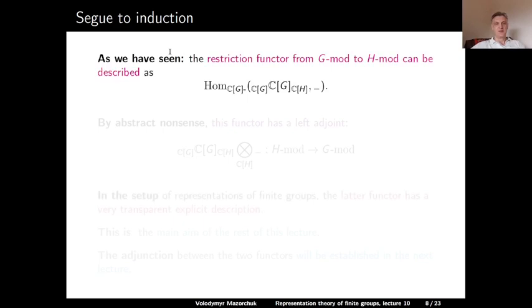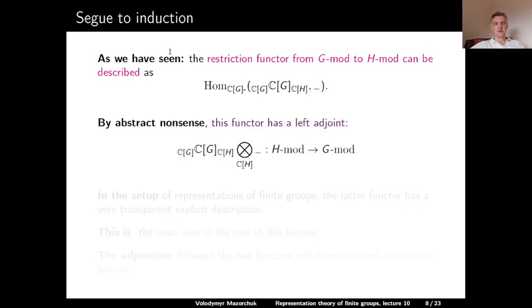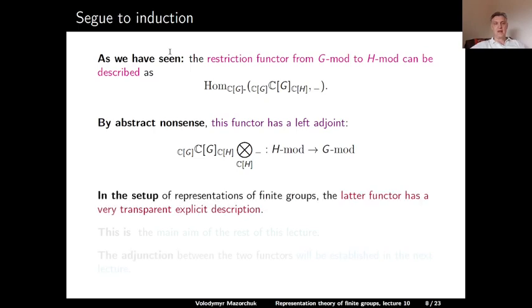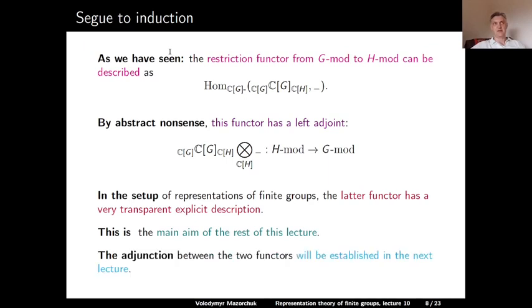Now let us make a short segue to induction. As we have seen, the restriction functor from G-mod to H-mod can be described as the functor of taking homomorphisms from the regular CG-CG bimodule, considered as a CG-CH bimodule by restriction, to blank. By abstract nonsense, taking such homomorphisms has a left adjoint given by tensoring with this bimodule. So tensoring with the CG-CH bimodule CG is a functor from H-mod to G-mod. In the next lecture, we will prove that this explicit description really provides an adjoint to the restriction functor.